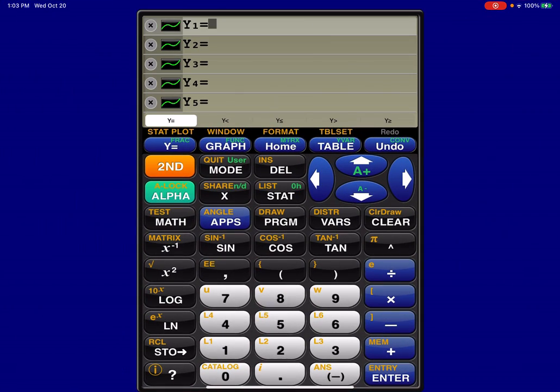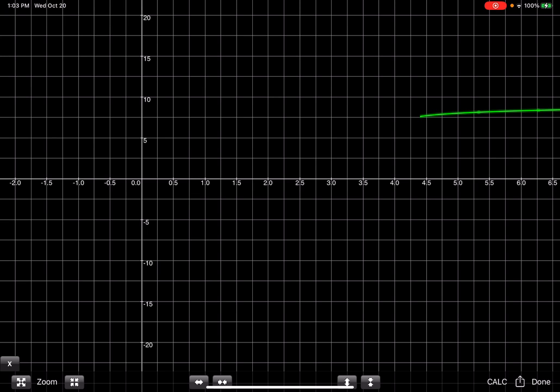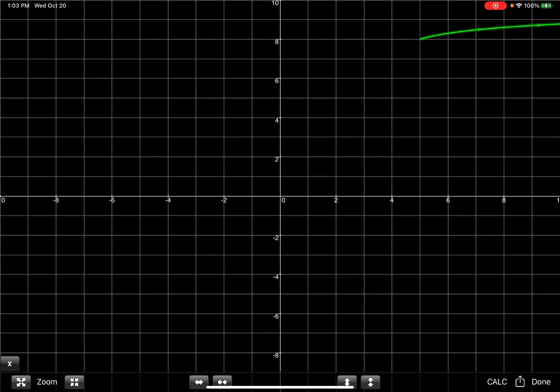So I'm gonna go into my y equals. Let's clear this out. We're gonna do log and in parentheses X minus four, close those grouping symbols and add eight. Let me graph here. I'm gonna hit zoom standard just so I can see it a little better.